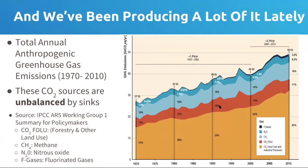We also have CO2 from land-use change in the dark orange above — that's if you cut down forests, for instance. Then you can see the smaller contributions of methane in light blue, nitrous oxide in darker blue, and fluorine gases in blue. All of them have been going up in their emissions to the atmosphere in recent decades. These are sources of CO2 not balanced by the natural ability of the planet to remove that CO2 from the atmosphere at the same rate it's added.